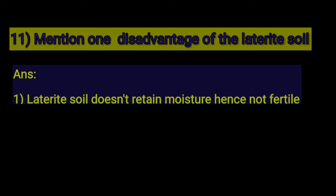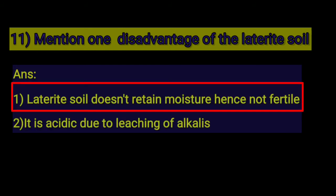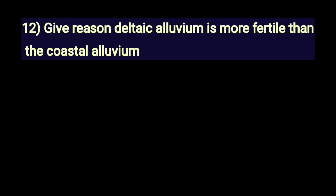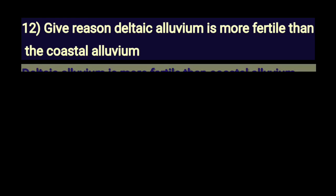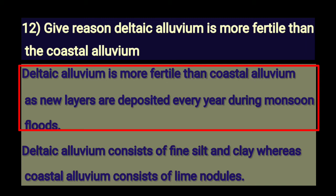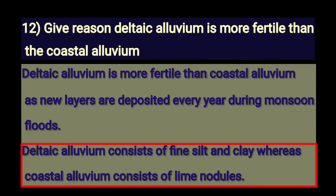Mention one disadvantage of laterite soil. Laterite soil does not retain moisture, hence it is not fertile. It is acidic due to leaching of alkalis. Give reason: Deltaic alluvium is more fertile than coastal alluvium, as new layers are deposited every year during monsoon floods. Deltaic alluvium consists of fine silt and clay, whereas coastal alluvium consists of lime nodules.